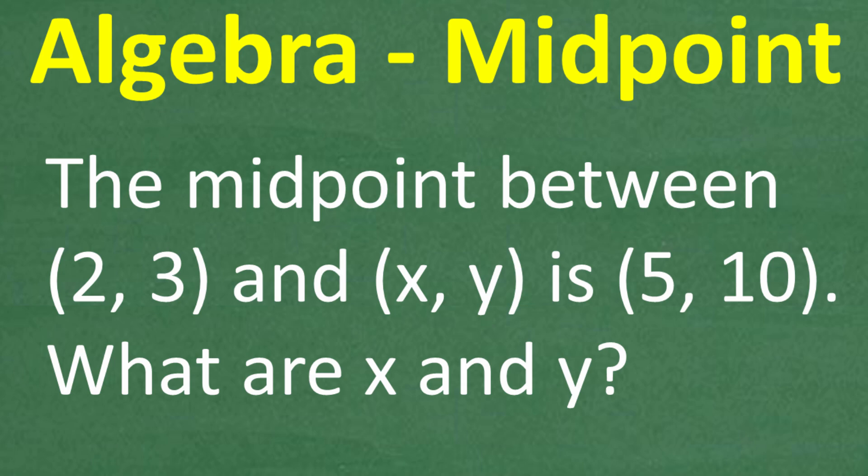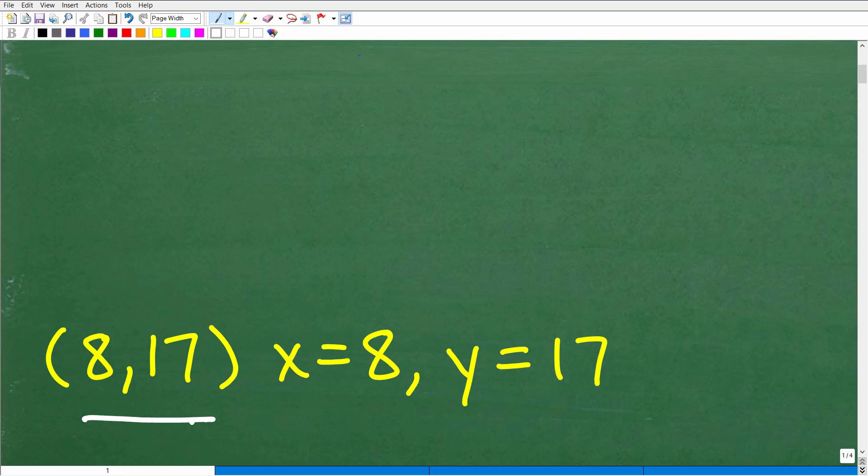Let's see the answer here. We're trying to find what x and y is. Specifically, what is the coordinate or the ordered pair, the point here, where 2, 3 and this mystery point, the midpoint between this point is 5, 10. And the answer is 8, 17. So this is the point. This is x, this is y. Remember, we're talking about an ordered pair, x, y. So x would be equal to 8 and y would be equal to 17.